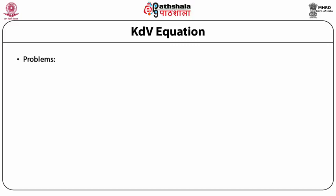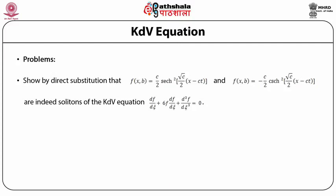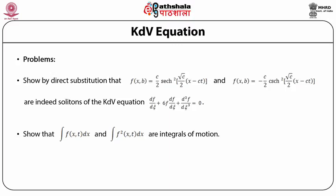Let us now take up some problems. First, show by direct substitution that f(x,t) = (c/2)·sech²[√(c/2)·(x − ct)] and f(x,t) = −(c/2)·csch²[√(c/2)·(x − ct)] are indeed solutions of the KdV equation ∂f/∂t + 6f·(∂f/∂x) + ∂³f/∂x³ = 0. Another problem: show that the integrals ∫f(x,t)dx and ∫f²(x,t)dx are integrals of motion.